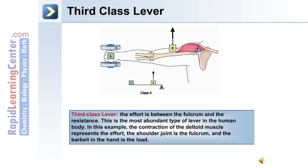In a third-class lever, the effort is between the fulcrum and the resistance. This is depicted in the image on the slide. This is the most abundant type of lever in the human body. In this example, the contraction of the deltoid muscle represents the effort. The shoulder joint is the fulcrum, and the barbell in the hand is the load.